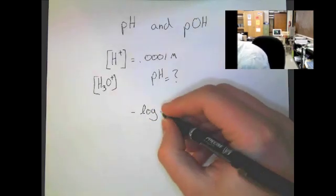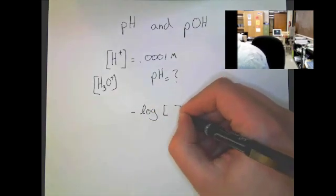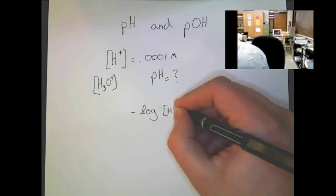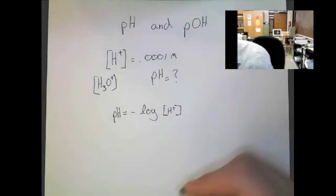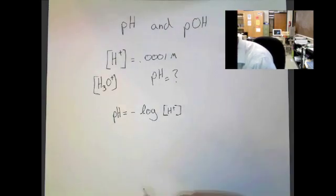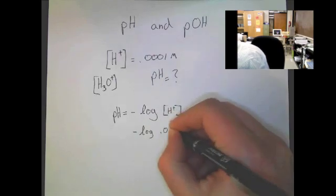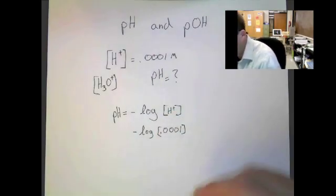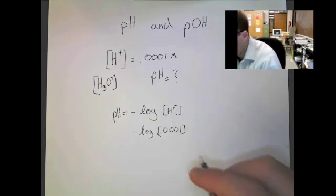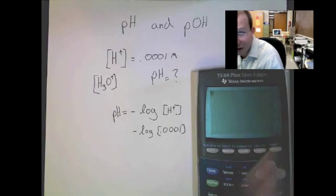The negative log of the H-plus concentration is equal to pH. That's all we have to do. So let's just plug this in. Negative log of 0.0001. And again, the brackets represent concentration. Remember that they represent molarity.